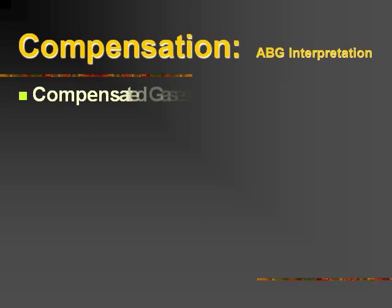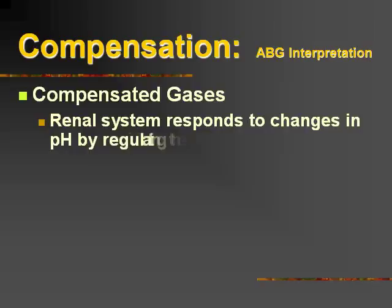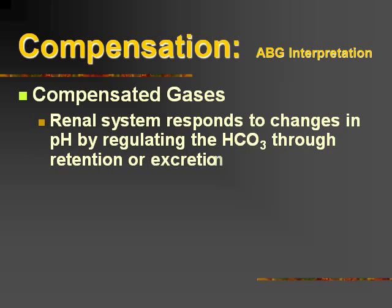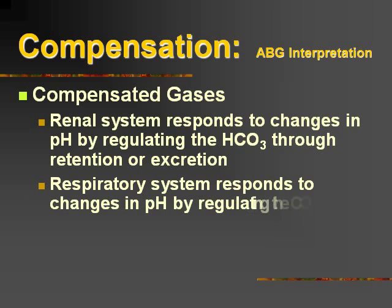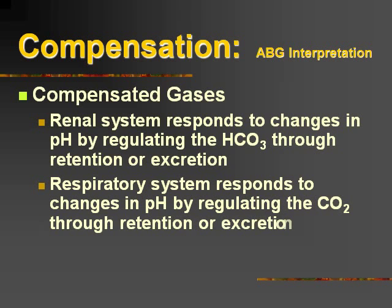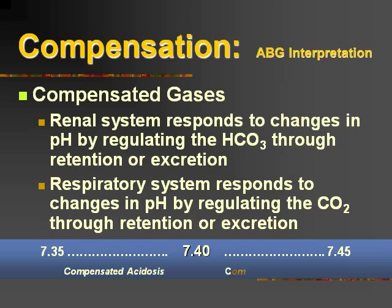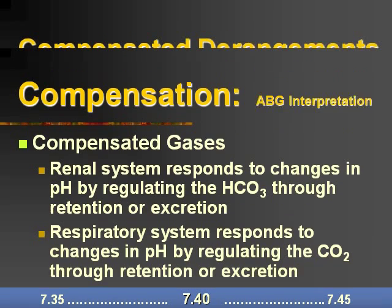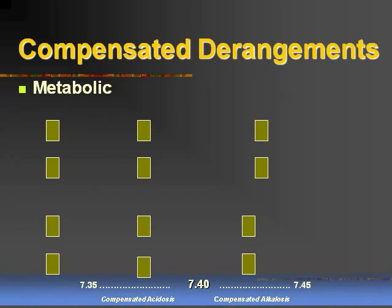Let's talk about compensation. There are two systems that compensate for blood gases: the renal and the respiratory. The renal is rather slow about making changes, and it can do this either through retention or excretion, as well as the respiratory system. It can change the pH by increasing or decreasing the acid or the CO2 by retaining or excreting it. The body likes to have a normal pH.